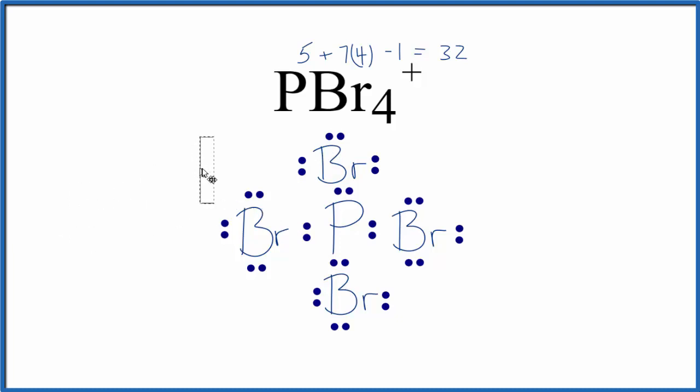We should add brackets, though, to show that it's an ion, and then we'll put our plus sign outside. So that's it. This is the Lewis structure for PBr4+, and this is Dr. B. Thanks for watching.